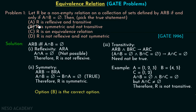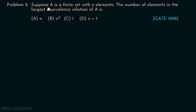Now let's see problem 2. Suppose A is a finite set with n elements. The number of elements in the largest equivalence relation of A is what? This question was asked in GATE 1998. I encourage you to pause the video and try to answer this on your own.